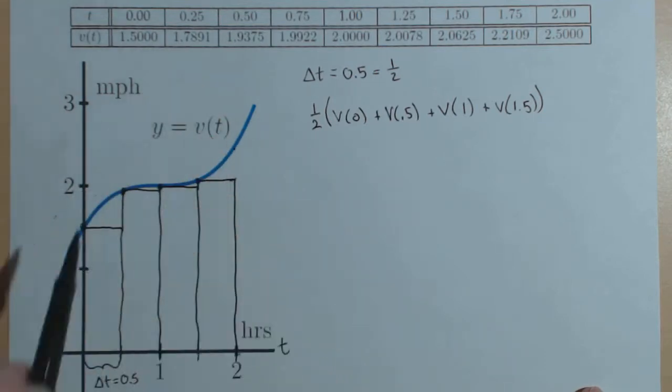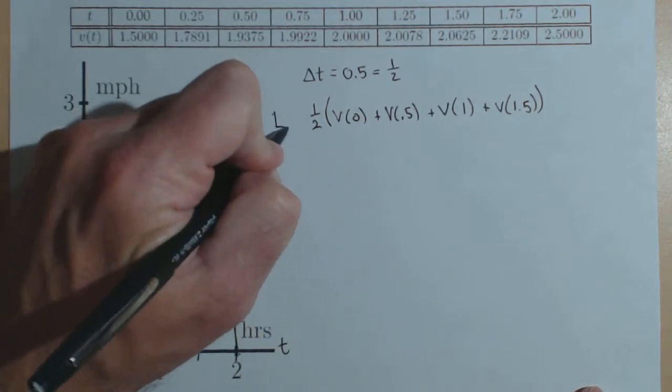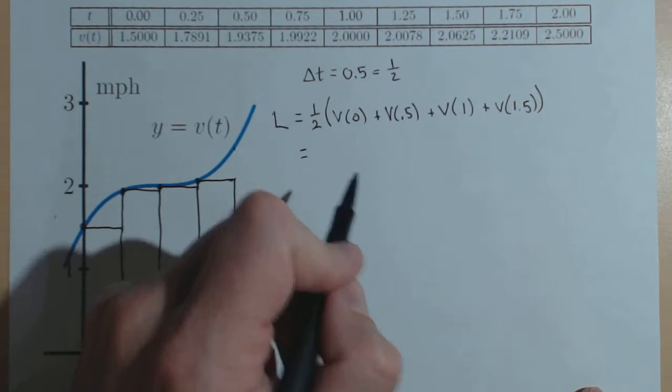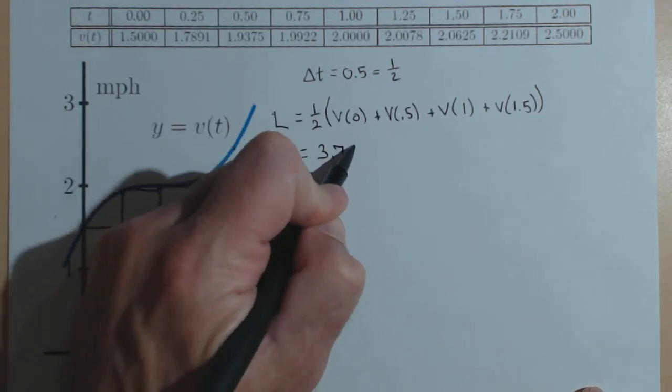This is going to give us an estimation of the distance traveled between 0 and 2. I'm going to call this L for the left-hand rule or left-hand sum. If you calculate this, it comes out to be 3.75.